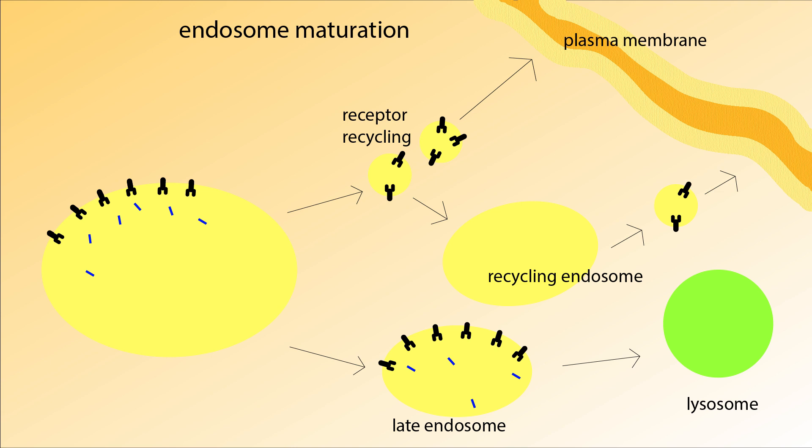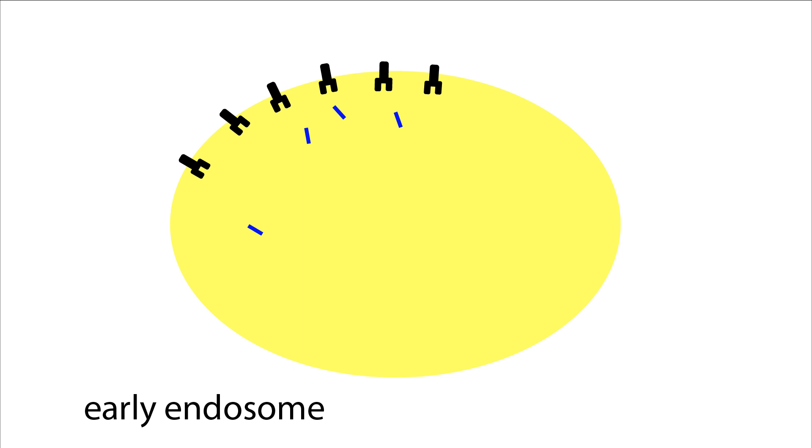Endosome maturation itself is a multi-step process. The first transition is the formation of multivesicular bodies. While the ligands were released into the endosome lumen, receptors and other proteins remain in the endosome membrane. This presents a problem, as the membrane protects regions of these proteins from degradation enzymes.